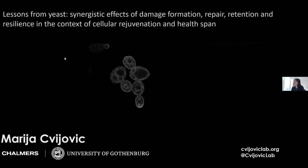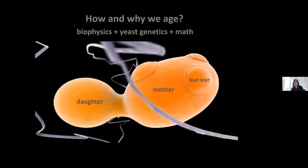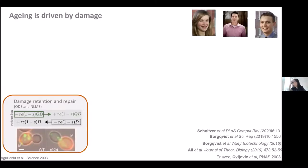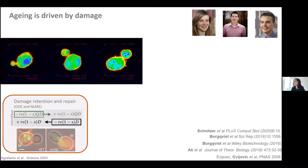This is the yeast cell — you have a mother and then the daughter. With aging, it's driven by damage, and this is a universally conserved evolutionary case from bacteria over yeast to mammalian systems. The older you are, the more damage you have. This phenomenon was discovered in yeast in 2003 by the Nistrum group, coinciding with me starting my PhD in 2005 in Germany.